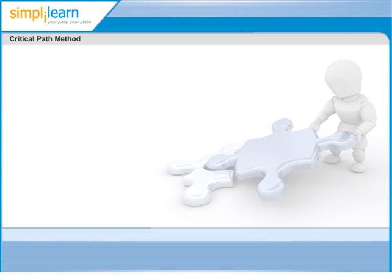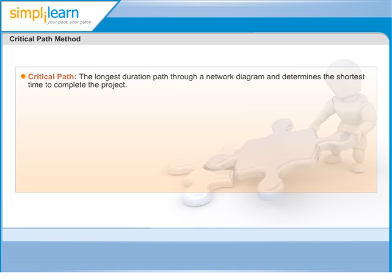Critical Path Method is another technique to do with a scheduled network analysis. It is a very popular technique and we will be studying this method in the next few slides. Critical path is defined as the longest duration path through a network diagram and determines the shortest time to complete the project. We will shortly learn how to identify a critical path in a network.